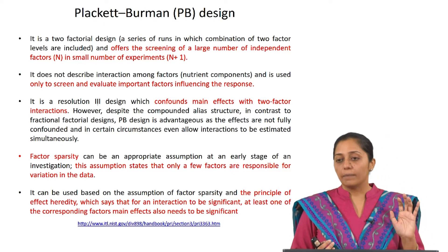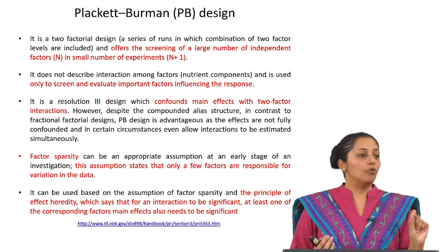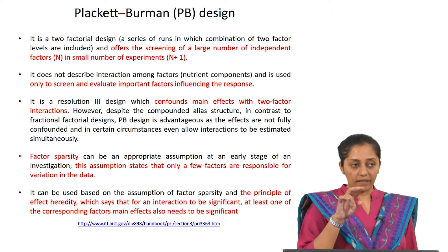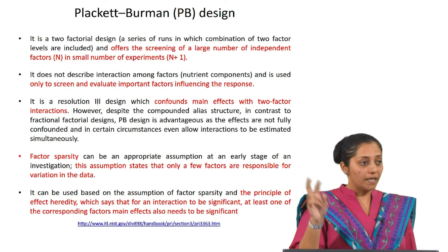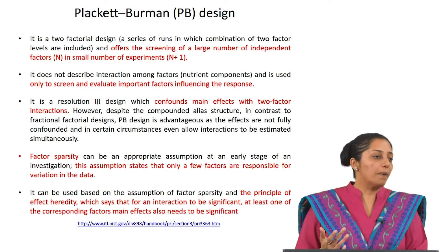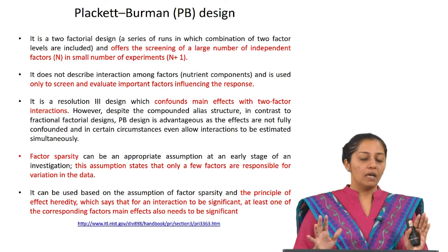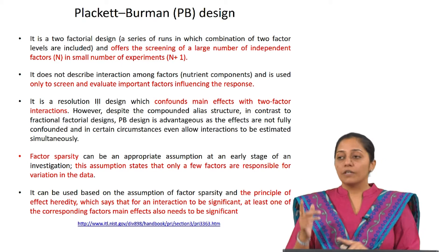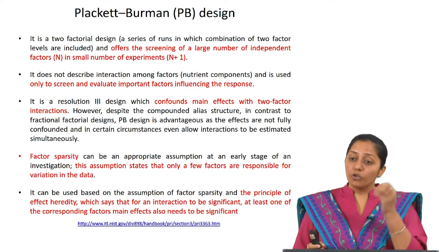The advantage of Plackett-Burman is that if you have a large set of parameters — say 10, 12, 15, or 16 — if you have n parameters you can carry out the design and analysis with only n+1 experiments. It does not describe the interaction among factors and is used only to screen and evaluate important factors influencing the response, which means it helps you rank the parameters. It is a resolution-3 design, meaning it confounds main effects with two-factor interactions.